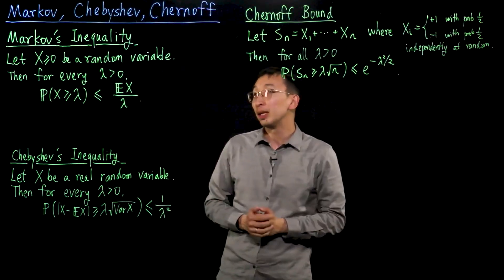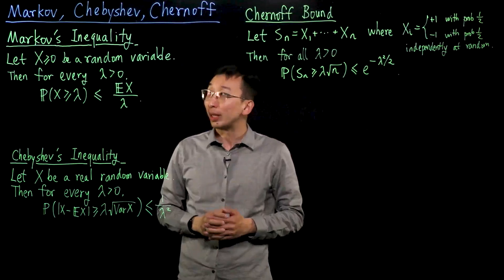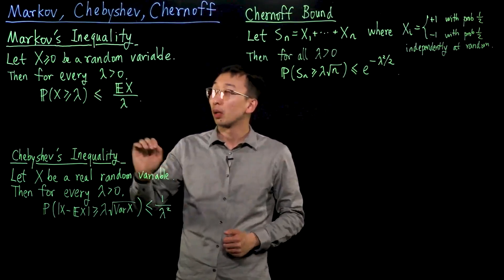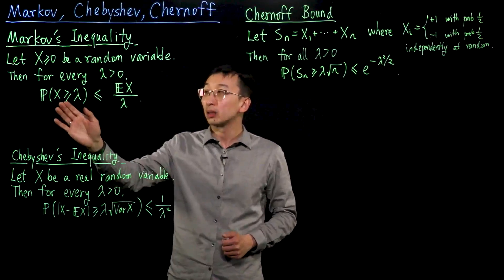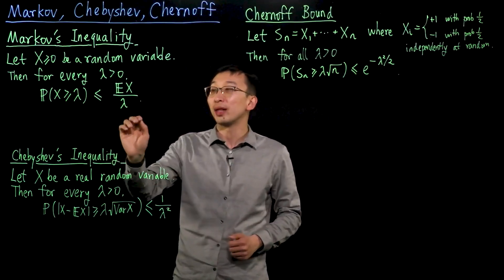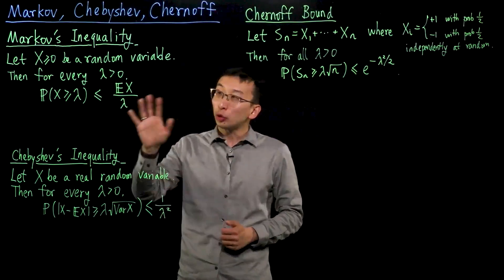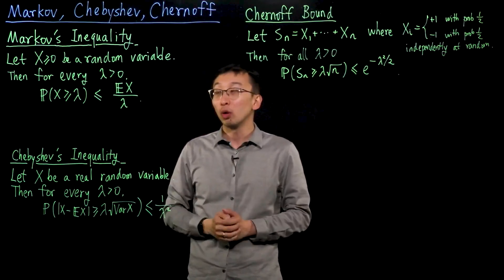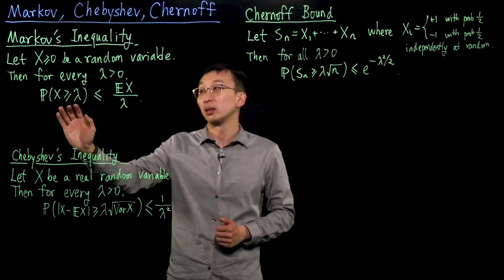Markov's inequality says that if we are given x, a real valued non-negative random variable, then for every positive number lambda, we have the following inequality: the probability that x is at least lambda is no more than the expectation of x divided by lambda. One way to interpret this is that if x is a non-negative random variable with small expectation, then it is unlikely for x to be very high.